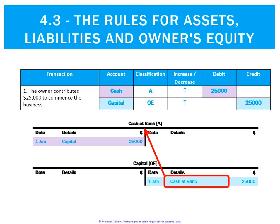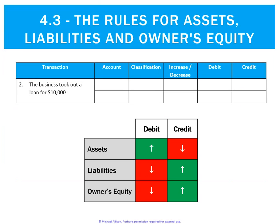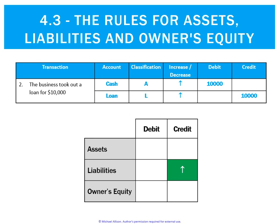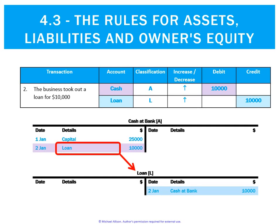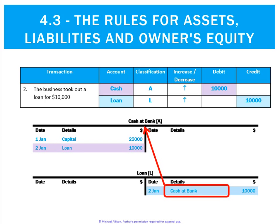The second transaction: the business took out a loan for $10,000. Cash is an asset going up because the business has more money — that's a debit. However, the loan is a liability increasing, as we're obligated to pay the bank back, so that goes up on the credit side. Posting to the ledgers, we do a debit to cash and a credit to loan. In the cash at bank ledger the reference is 'loan', and in the loan ledger the reference is 'cash at bank'.